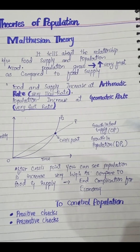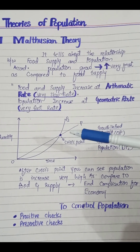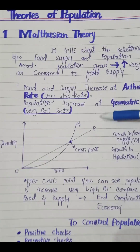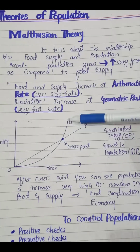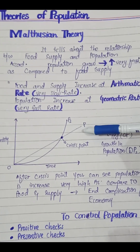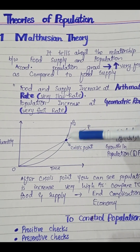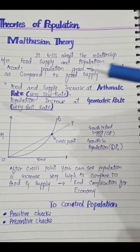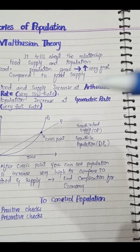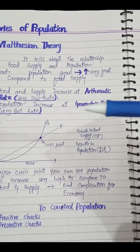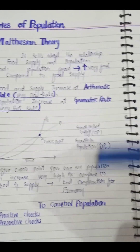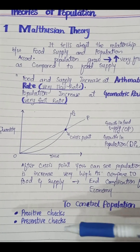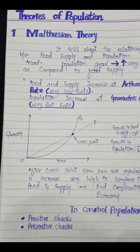When line OP and OP2 meet and cross, we have a crisis point. After this crisis point, you can see that population has increased very high while the food supply line is still going up slowly in a straight line. This means population is increasing much faster compared to food supply.